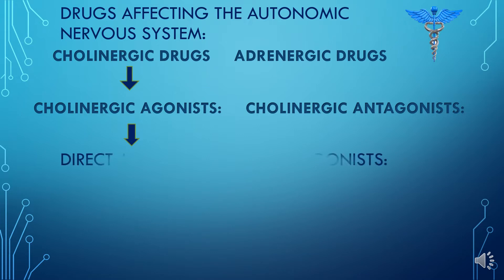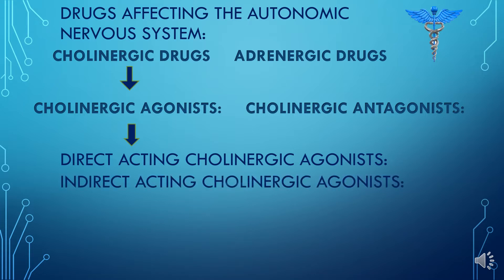The cholinergic agonist may be direct-acting or indirect-acting. The direct-acting cholinergic agonist binds directly to the receptors, while the indirect-acting cholinergic agonist binds to the enzyme that is responsible for the breakdown of acetylcholine.